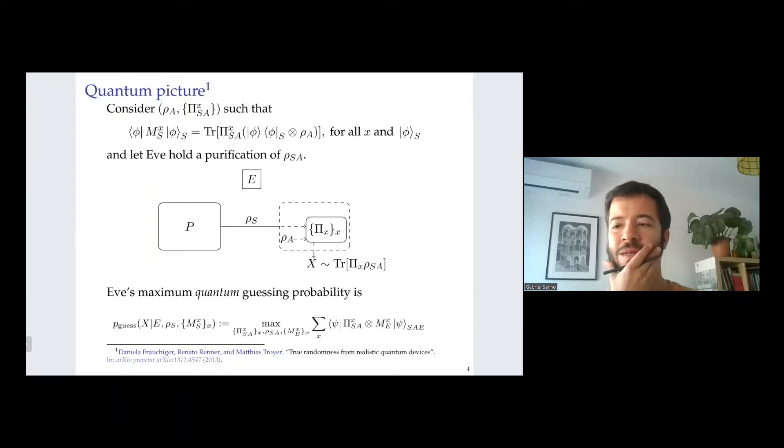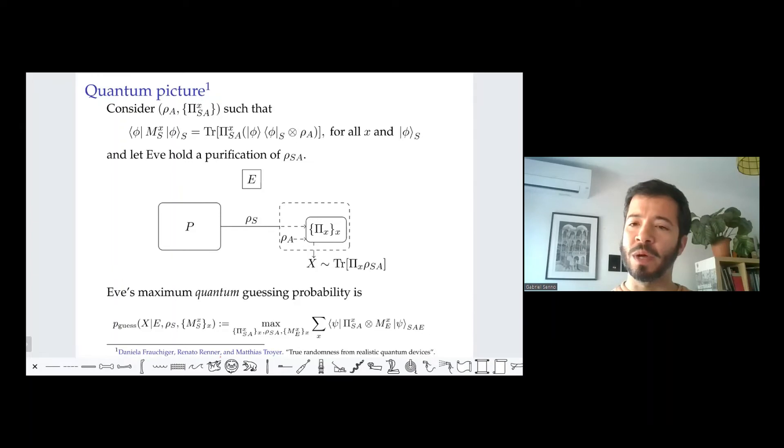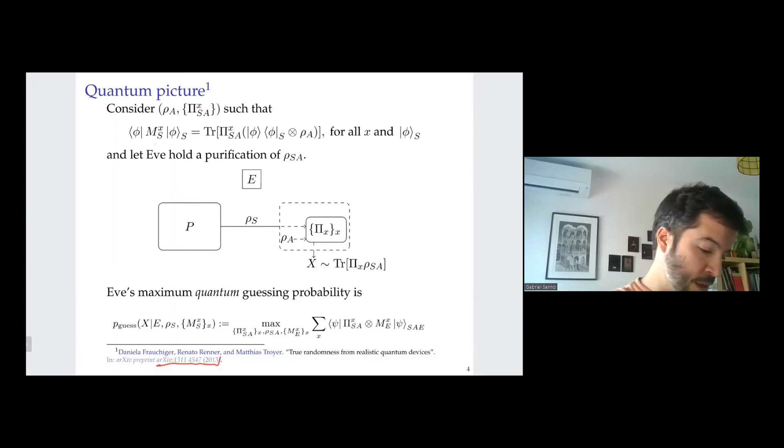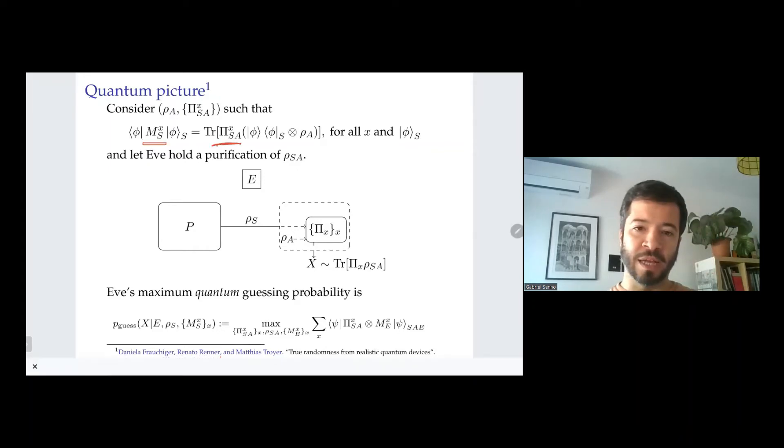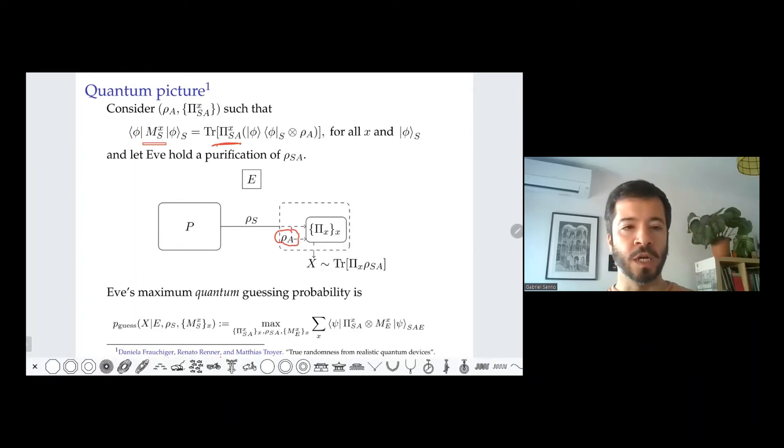So now let me explain the quantum picture, which is based on this very influential manuscript from 2013 by Fawzi, Renner, and Troyer. It consists of assuming that what one sees in S as the POVM M_S is actually a projective measurement on S and an ancillary system A. So this is like a Naimark dilation, but unlike the standard one, in this so-called generalized Naimark dilation, the state of the ancillary is allowed to be mixed.